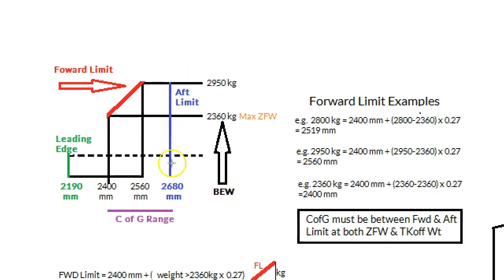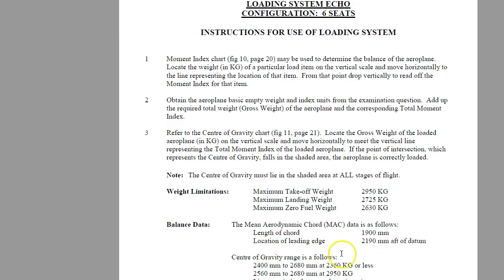Okay, so the aft limit remains constant. Our echo loading system tells us that. So if we flick over here, the aft limit, no matter which weight you're at, stays at 2680. Let's see how the forward limit changes depending on the weight. And we have two weight categories there for the forward limit.